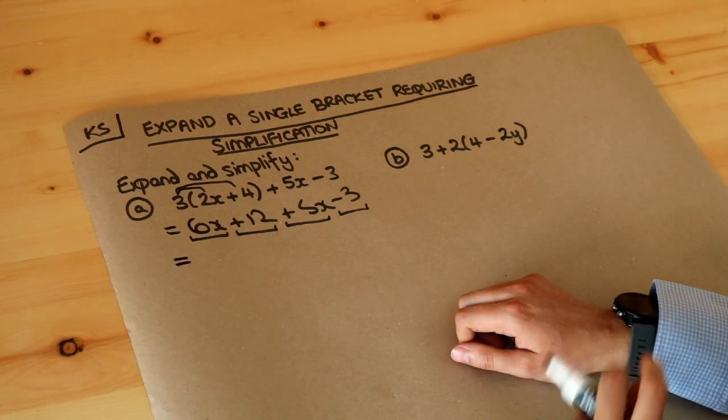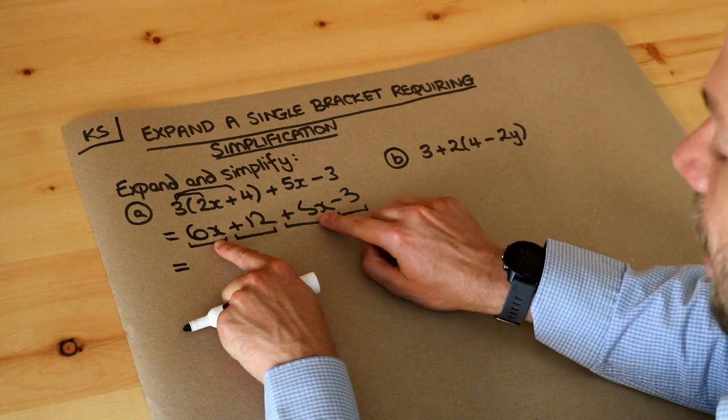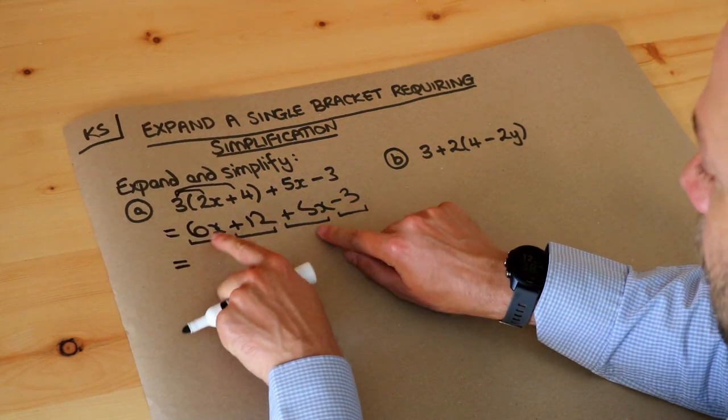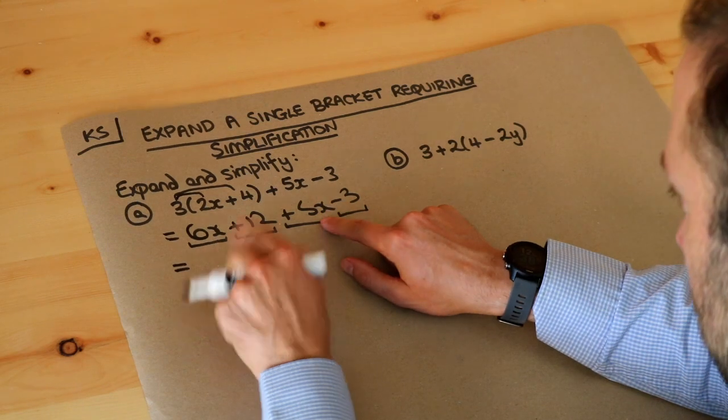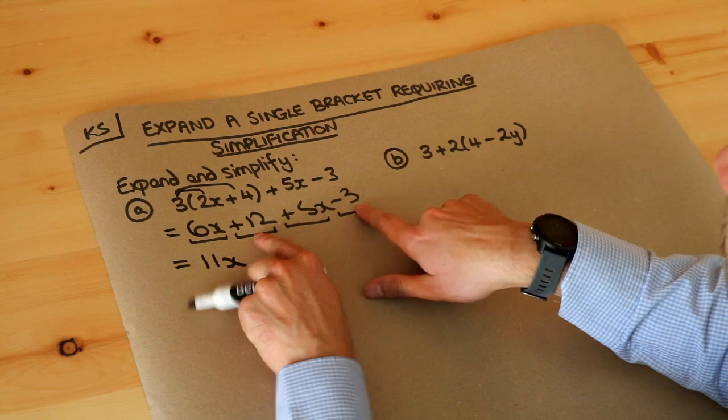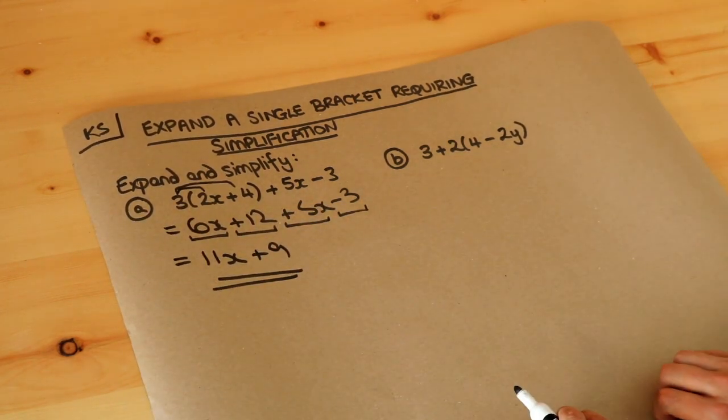And then let's look at like terms. Terms are like terms so they involve the same variables and the same powers. Now these are both x terms and these don't involve x so these are the collect together, 6 lots of x plus 5 lots of x is 11 lots of x and then plus 12 minus 3 is plus 9 and that's the final answer. We can't simplify that any further.